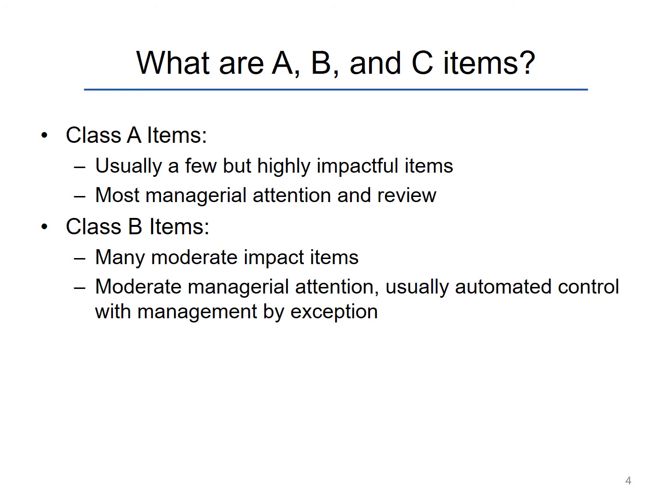Class B items on the other hand are the ones in the middle. They have moderate impact and usually can benefit greatly from automated control. There are other videos on this website that explain some of the inventory control methods that are really beneficial for the items in this class.